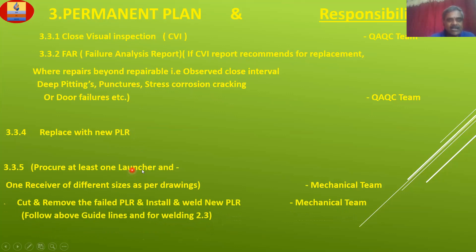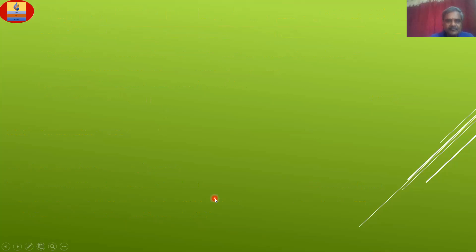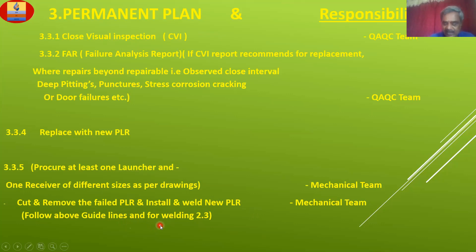Procure at least one Launcher and one Receiver as spare. Mechanical Team: ensure that the spares are available. Cut and remove the failed PLR, then install and weld new PLR by the Mechanical Team. Follow above guidelines and refer to well link 2.3.